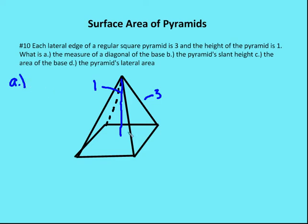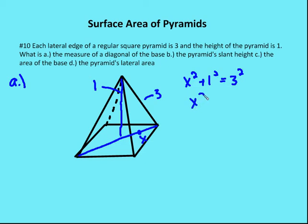Let's tackle part A — what is the measure of the diagonal? The diagonal runs from one corner of the base all the way to the other corner. I can find the diagonal using the Pythagorean theorem. Let's call this x. x squared plus one squared equals three squared, so x squared equals eight. If half the length of the diagonal is two root two, the entire diagonal is four root two. That's your answer for A.